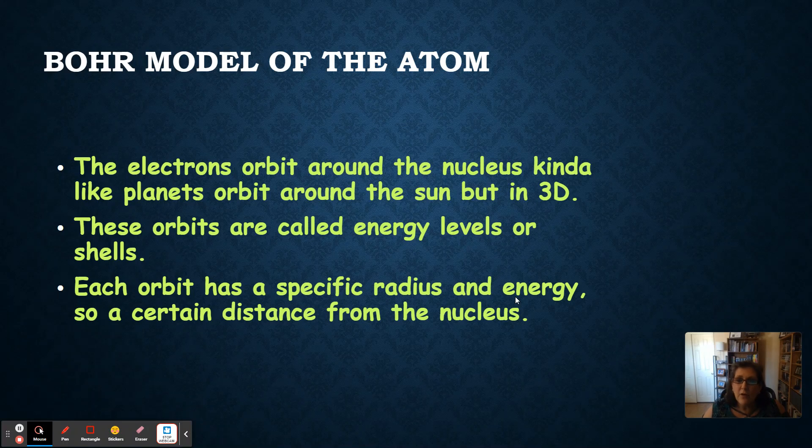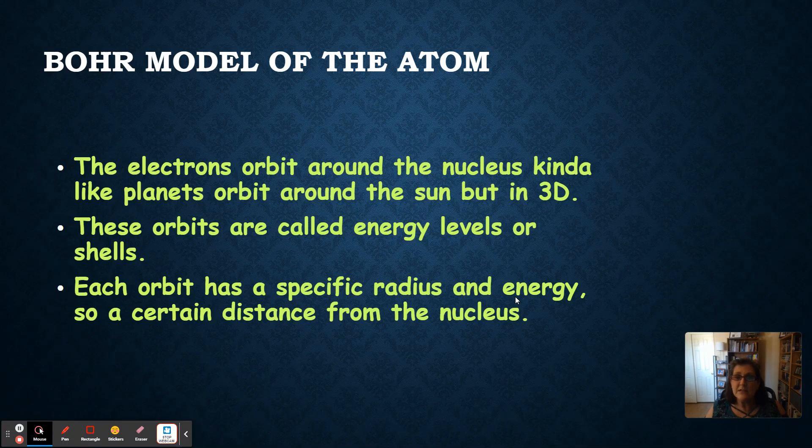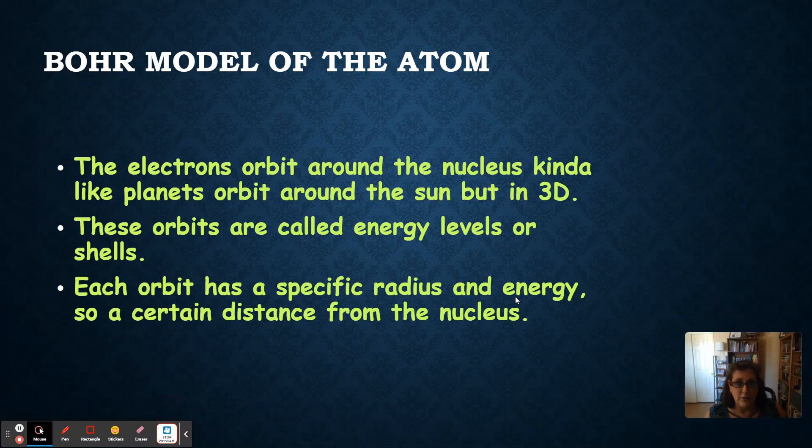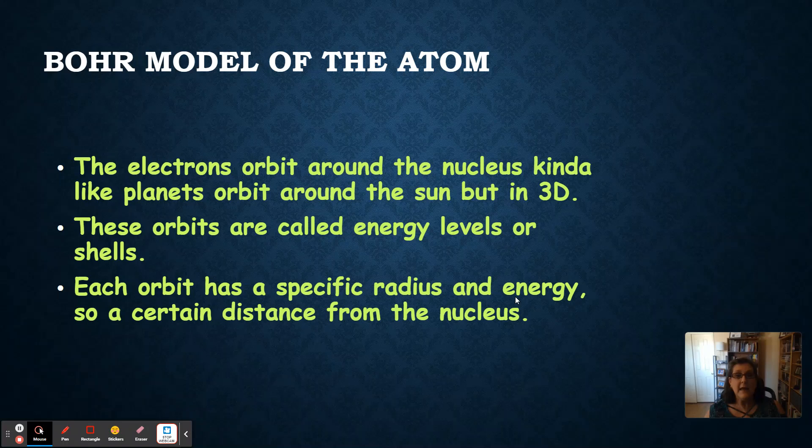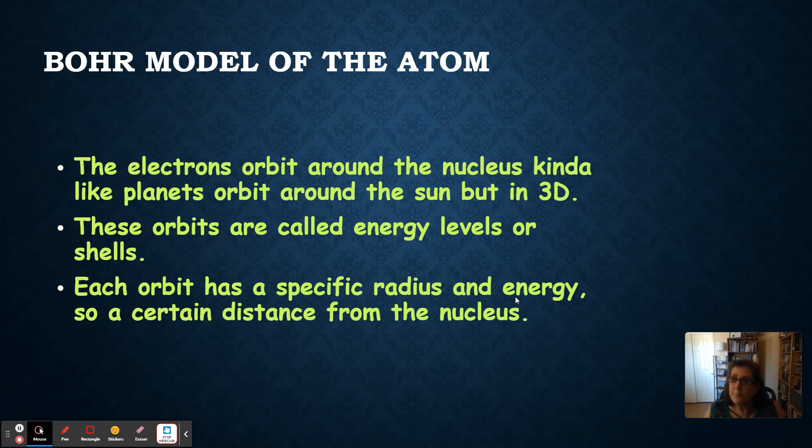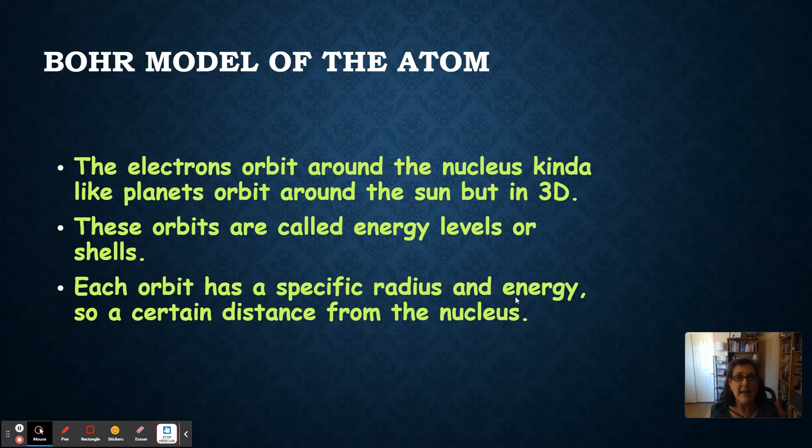The orbits are called energy levels, or if you were in high school chemistry, they call them shells. But at the college level, we're going to call these orbits energy levels, these spheres where the electrons can exist. Each of these orbits, or energy levels, has a specific radius, meaning distance from the nucleus, and energy.